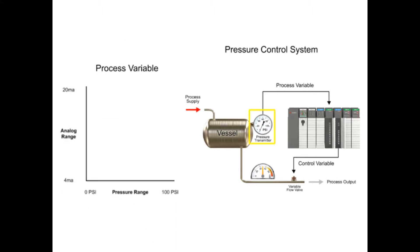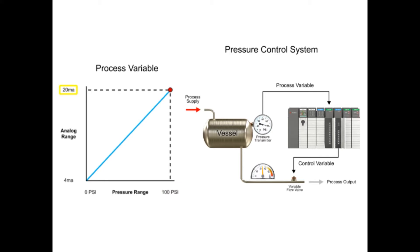The pressure transmitter, identified as the process variable, converts 0 to 100 PSI to a 4 to 20 mA signal. With a linear relationship, 0 PSI measured at the transmitter produces a 4 mA signal, and at 100 PSI, a 20 mA signal is produced.